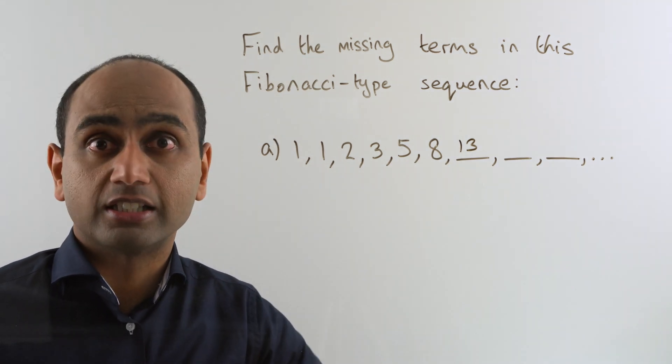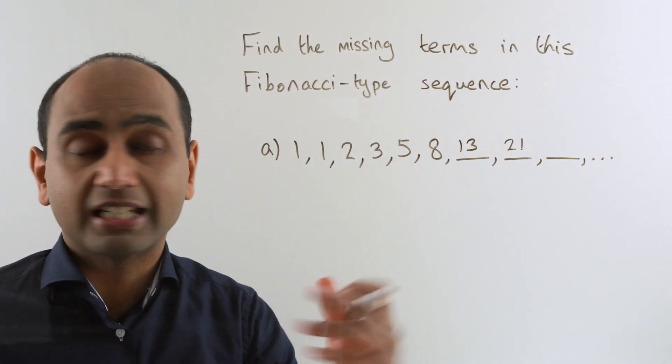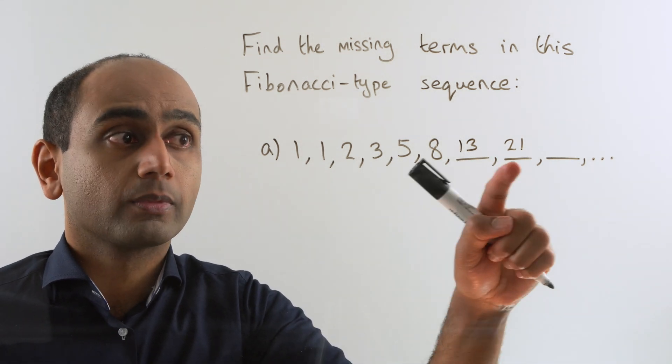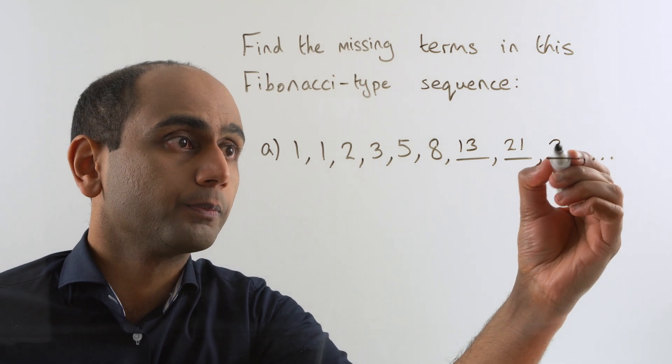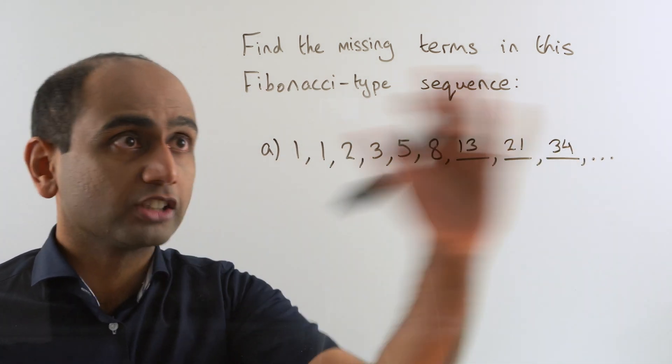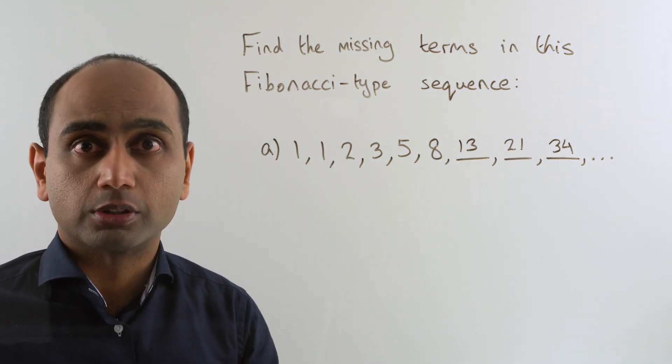And to get this missing term here we need to add these two together. 13 plus 21 is 34. And we could carry on forever, but we've answered the question. We've found the three missing terms in this particular Fibonacci type sequence.